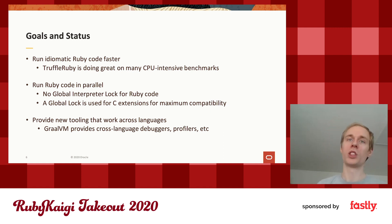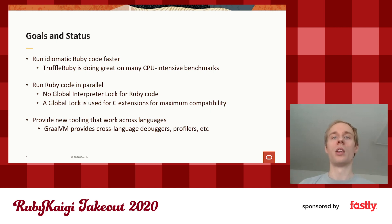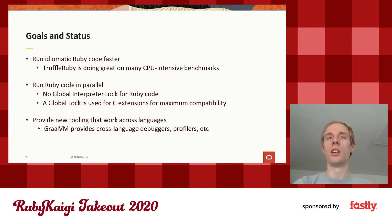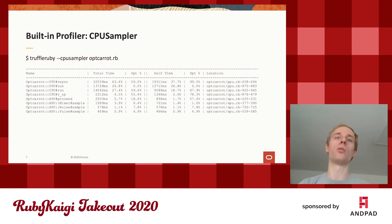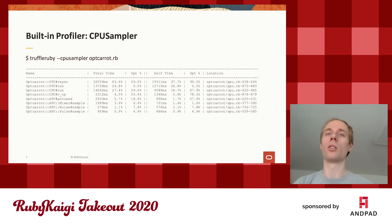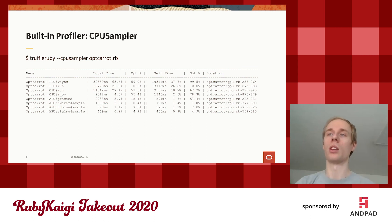GraalVM as a project provides new tooling that works across languages — for instance, cross-language debuggers and profilers. As a simple example, there's the CPU sampler, which is a sampling profiler. To run it on TruffleRuby, you simply do `truffleruby --cpu-sampler` followed by your program. At the end of the program, it gives you a report showing how much time was spent where, including how much was in compiled code and how much in the interpreter.